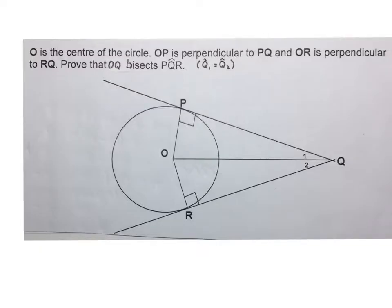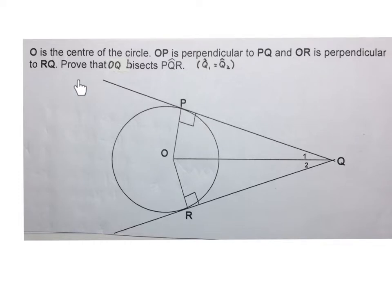Here is our second problem. They say O is the center of the circle. OP is perpendicular to PQ — they indicated it. OR is perpendicular to RQ — they indicated it. And we have to prove that OQ bisects angle PQR, meaning OQ bisects that angle.